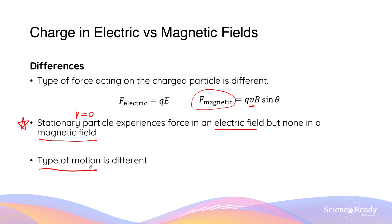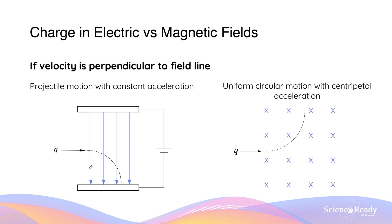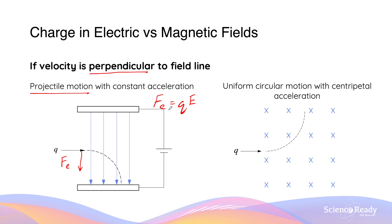Furthermore, the type of motion observed will be different for a particle inside an electric field versus a magnetic field. Inside the electric field, when a particle enters the field at a perpendicular angle, it will be acted upon by a force perpendicular to its velocity — in this case, the force due to the electric field points downwards — and as a result, the charged particle will undergo projectile motion. Since the magnitude of the electric force only depends on the charge and the electric field strength, if both variables remain constant, the charged particle will also experience constant acceleration.